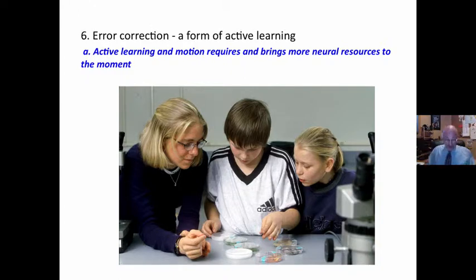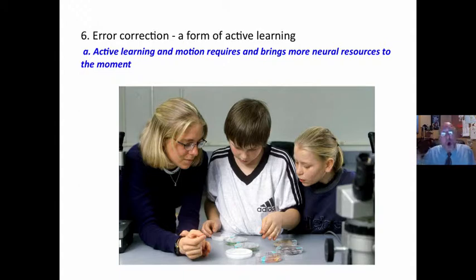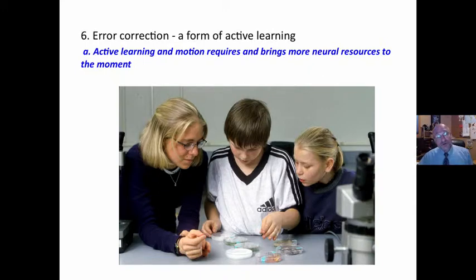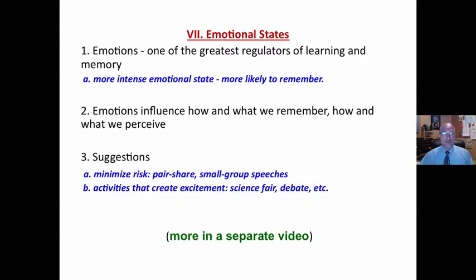Error correction is a form of active learning. Active learning requires that we bring more neural resources to the movement and to the learning. Humans are designed to recall better if we are actively engaged versus passively receiving something.